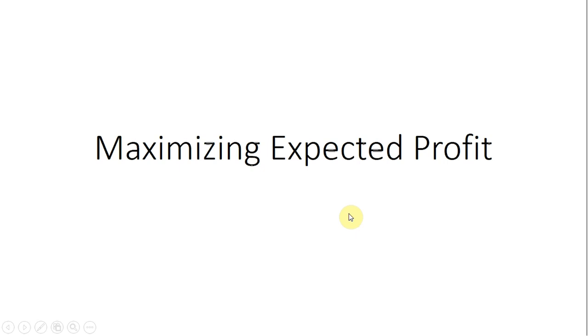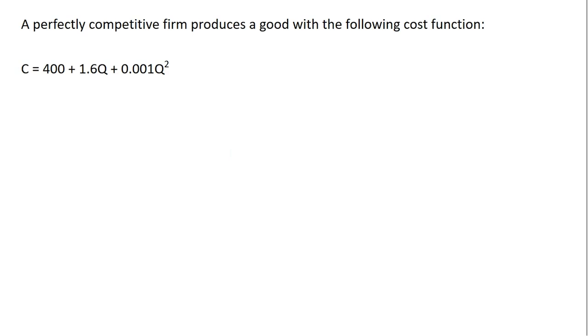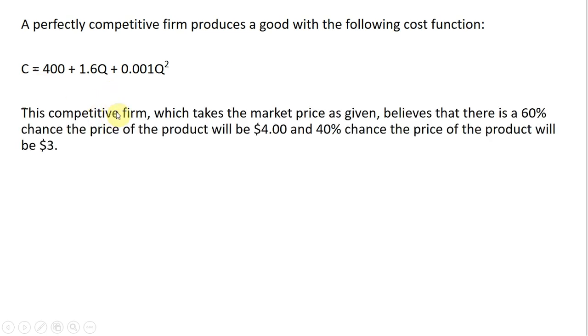In this video, we're going to maximize profit under uncertainty. We have a perfectly competitive firm that produces a good with the following cost function. This competitive firm, and remember, competitive firms are price takers. They take the going market price as a given.